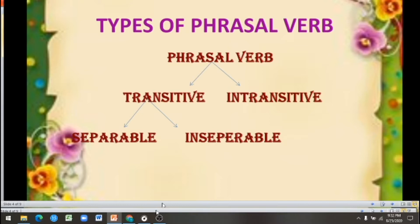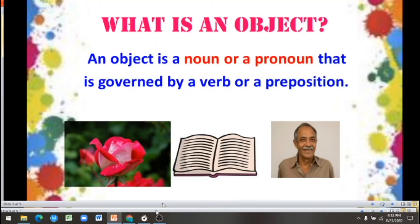Before that, we have to know about what is an object. An object is a noun or a pronoun that is governed by a verb or a preposition. A noun is the name of a person, place, thing, plant, or animal. A pronoun is the word used instead of a noun — he, she, it, they, I, we, you.